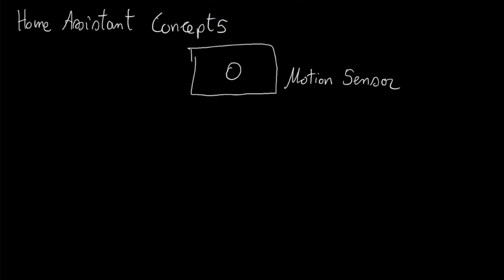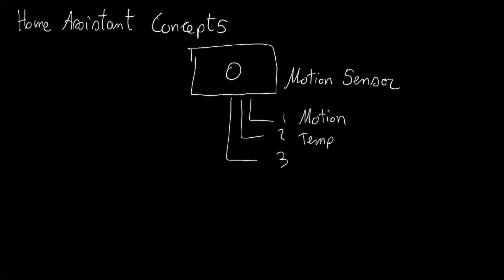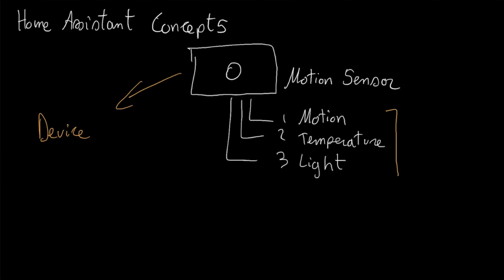Welcome to the lesson. Today we're going to look at Home Assistant concepts. We're going to take an example — this motion sensor. This motion sensor has three types of capabilities: it can sense motion, it can sense temperature, and it can also sense the level of light in the room. Now how does Home Assistant actually recognize these? This whole motion sensor is a device, and these three capabilities are called entities. From one device you can have multiple entities.